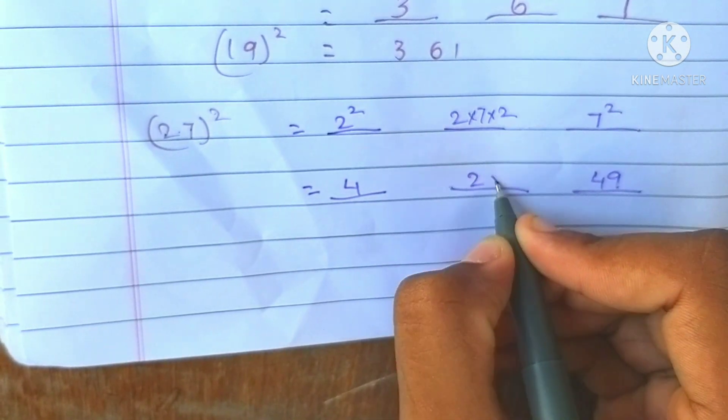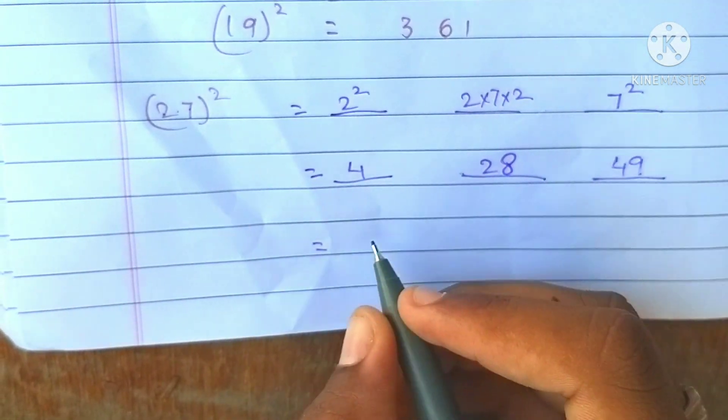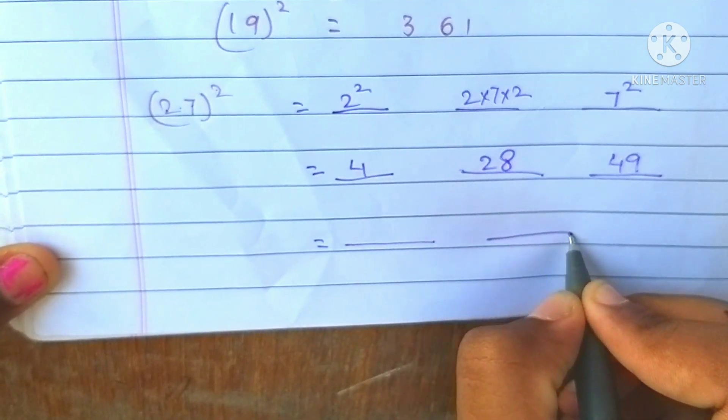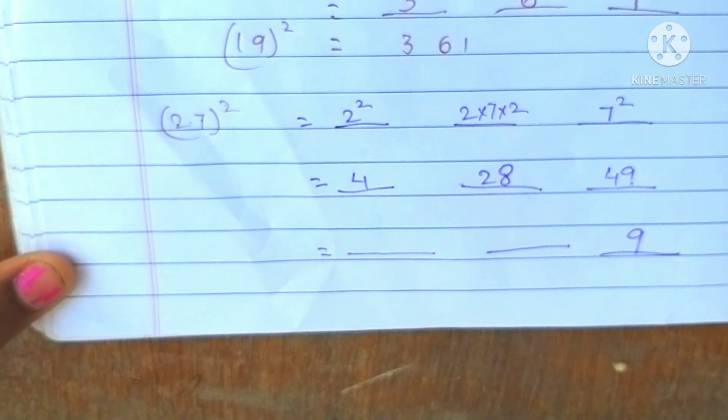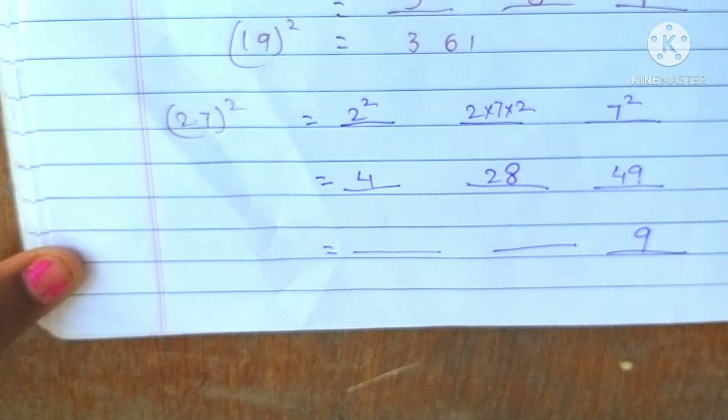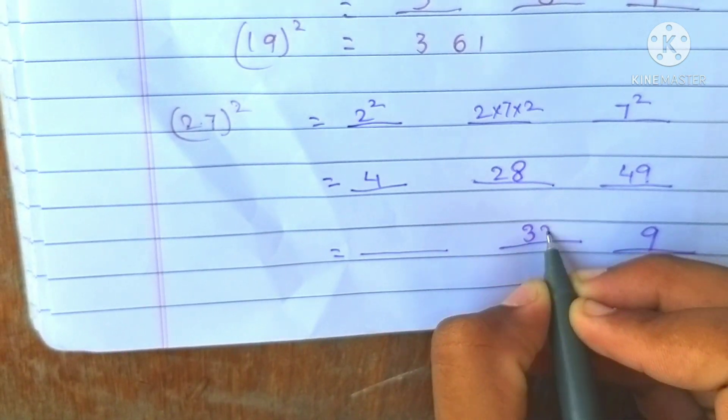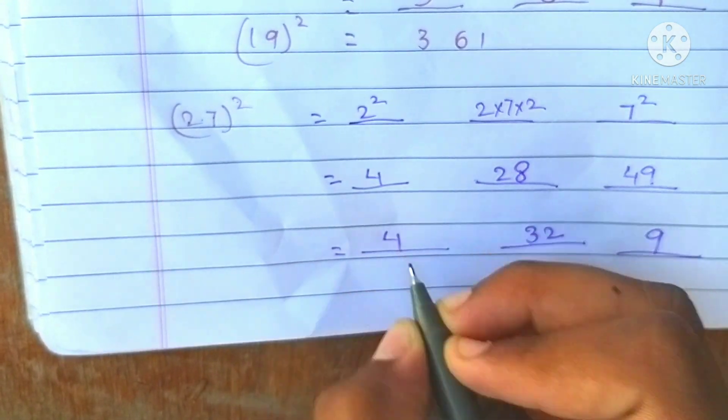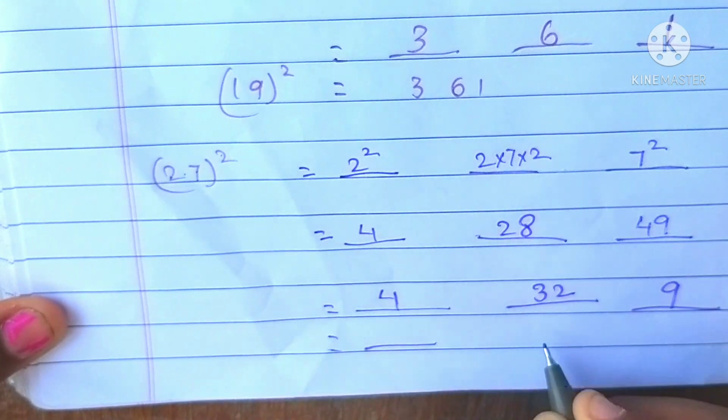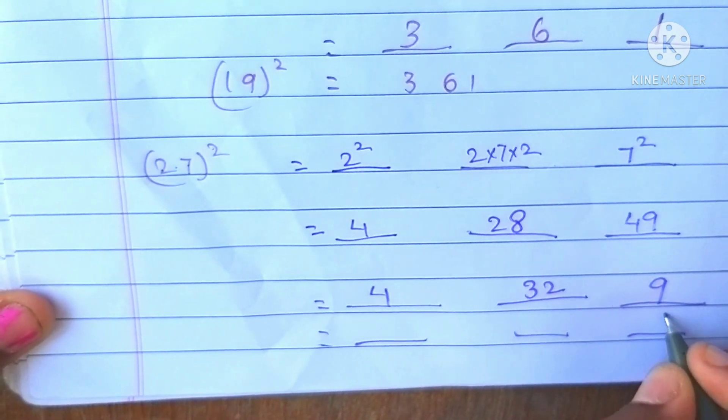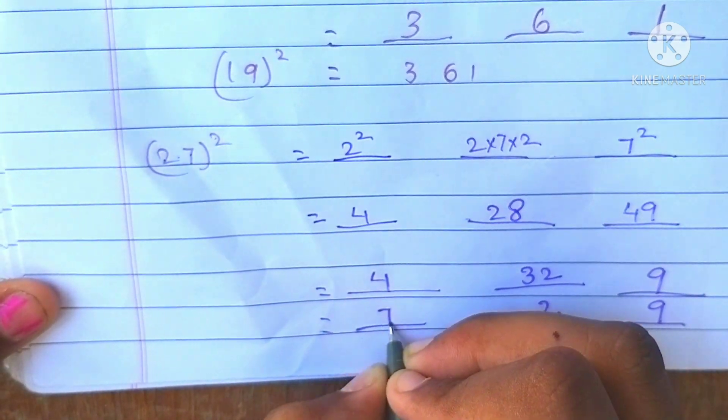I am keeping 9 here. 28 plus 4 is 32. 4 plus 3 is 7.